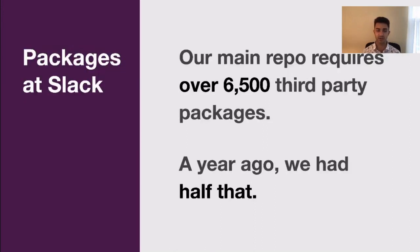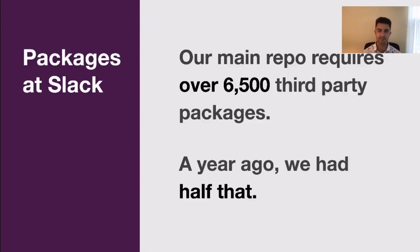Modern codebases often require tons of third-party code. At Slack, we have one main repository that contains our entire front-end and most of our backend. Our main repository currently requires over 6,500 packages. A year ago, we had half that. This trend would be concerning if we didn't have systems in place to limit risk. All of our first-party code has to be reviewed, but what about random stuff you find on GitHub? Clearly, some process must be in place to manage risk.